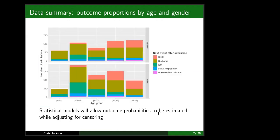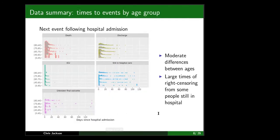We want to estimate the probabilities of these events while accounting for censoring — not naively summarize the proportion who had each event, but account for limited follow-up. As well as the probabilities of these alternative events, we also want to estimate the distribution of times to events over individuals. Here are histograms of the times to events.